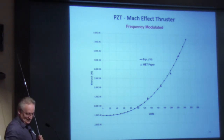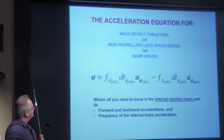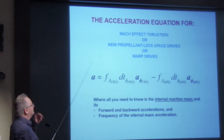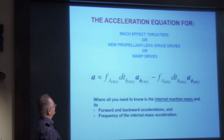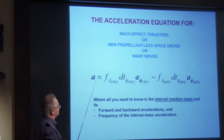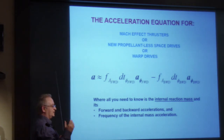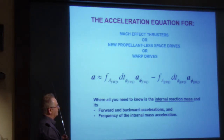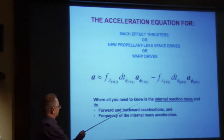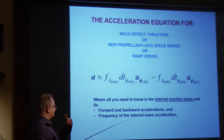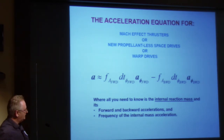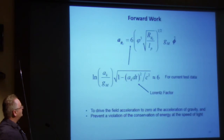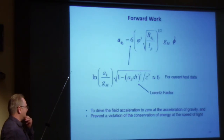Summarizing: regardless of whether you're looking at a Mach effect thruster, a new space propulsion system of any kind, or even a warp drive, this equation will apply. It says you don't have to eject the mass — you really only need to know the forward and backward accelerations of the masses and the frequency at which those masses are accelerating.